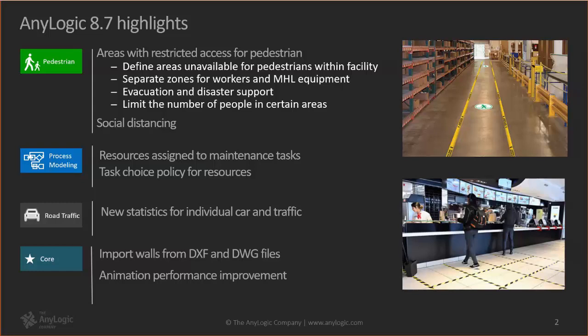Another feature added was the possibility of recalculating the priorities of agents waiting to be served by resources in the Process Modeling library. Also, an important feature for many people modeling factories and large buildings is the ability to import walls from DXF and DWG files — you no longer need to draw walls manually. Simply upload the files and AnyLogic will build the walls for you.